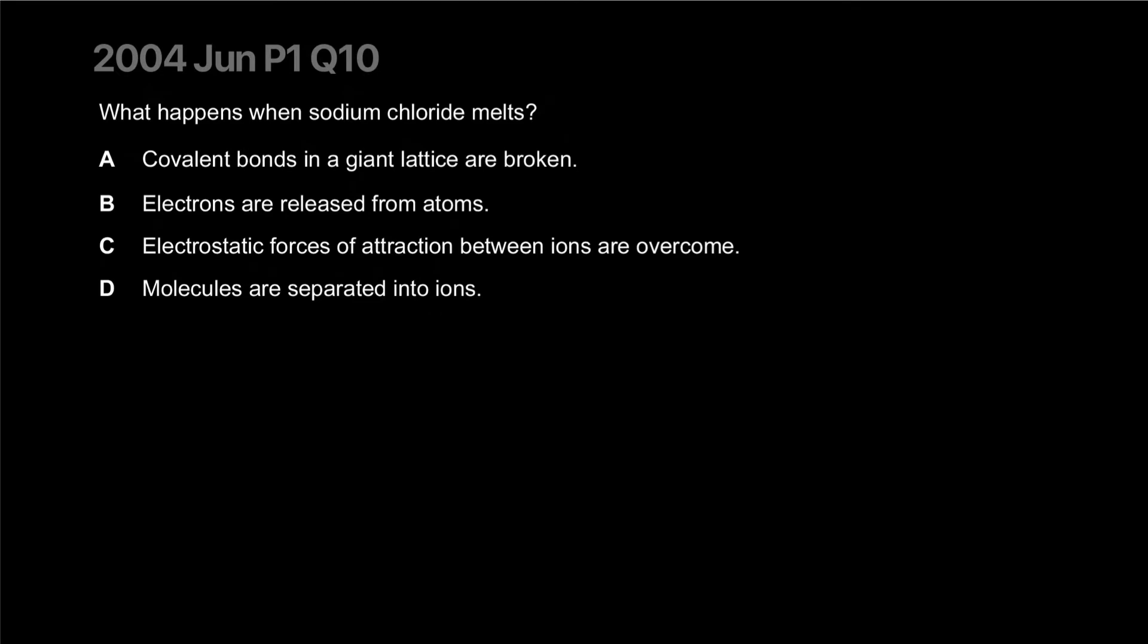What happens when sodium chloride melts? Covalent bonds in a giant lattice are broken. Electrons are released from the atoms. Electrostatic forces of attraction between ions are overcome. Molecules are separated into ions. It's wrong to think they're molecules to begin with and they separate into ions. They're already ions because that's what you draw.